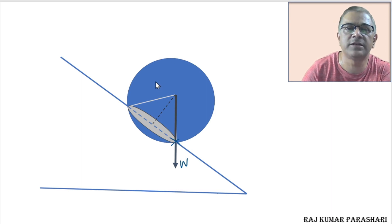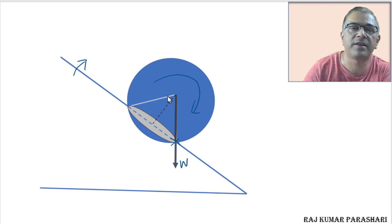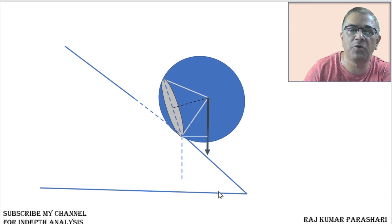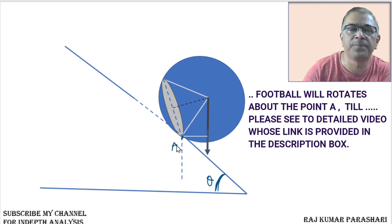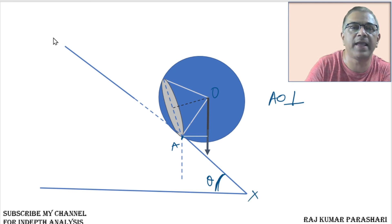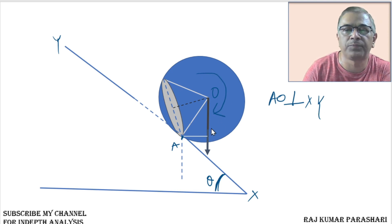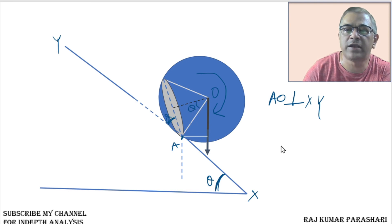Most people thought the sphere should start rolling right from this condition, but it will not happen. If the plank is tilted further, the football will start rolling for a particular value of the angle of elevation — specifically when AO becomes perpendicular to the plank XY. This is the situation when the football will roll. If you calculate this, with θ being the angle of elevation, the condition you obtain for rolling is sin θ = r/R.